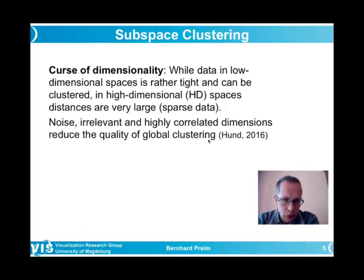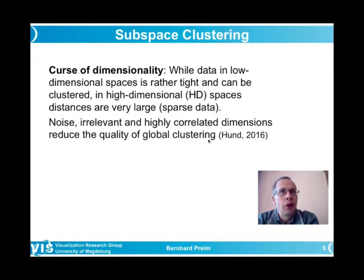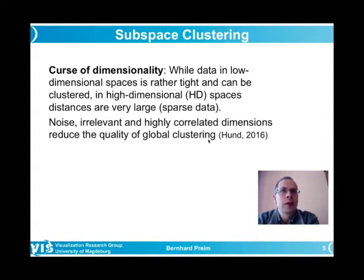Large data collections often contain dimensions that are irrelevant for a particular purpose, or dimensions that are highly correlated. For example, when characterizing patients, weight, height, body mass index, waist circumference, and hip circumference all represent slightly different but highly correlated information about obesity. It may therefore be useful to reduce dimensions for a particular application before applying clustering.